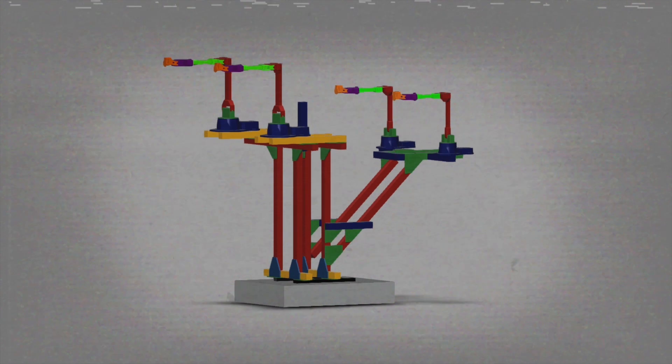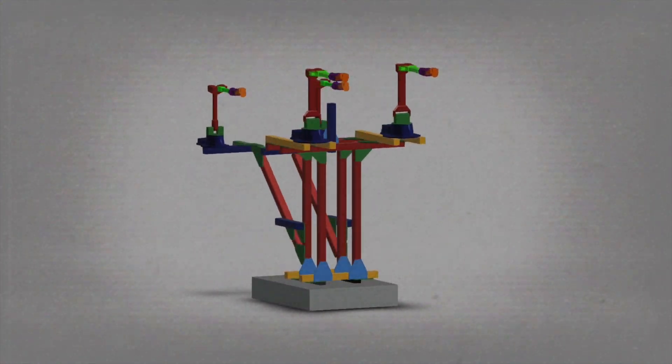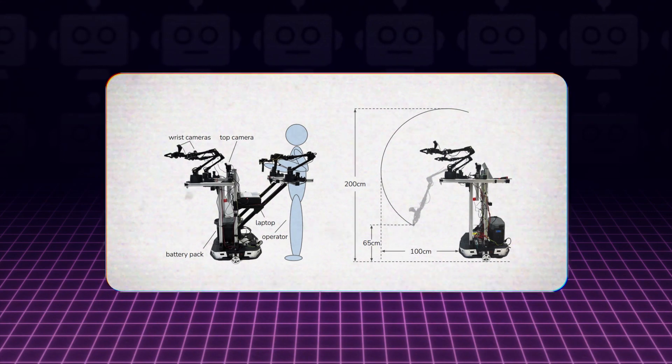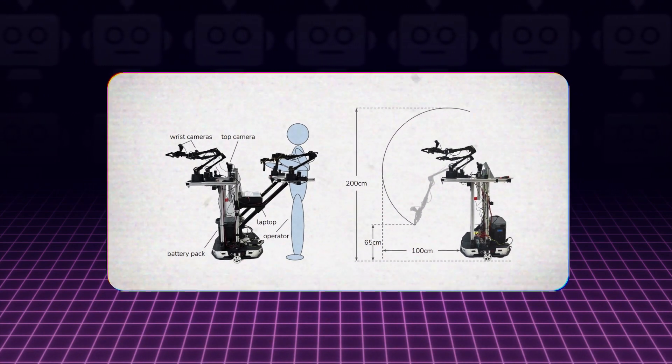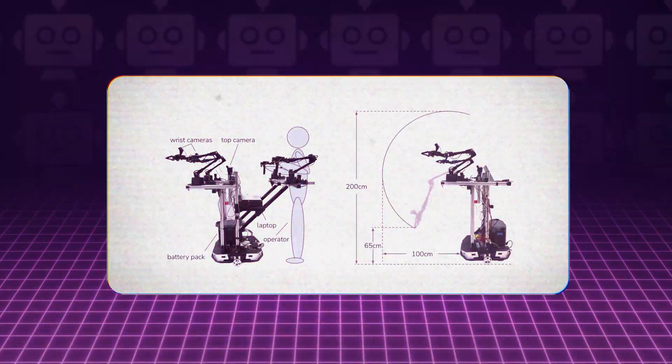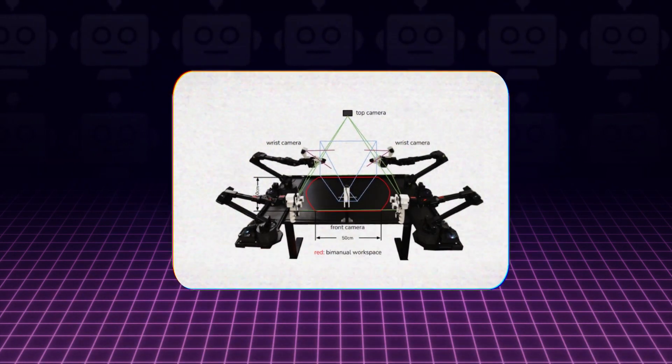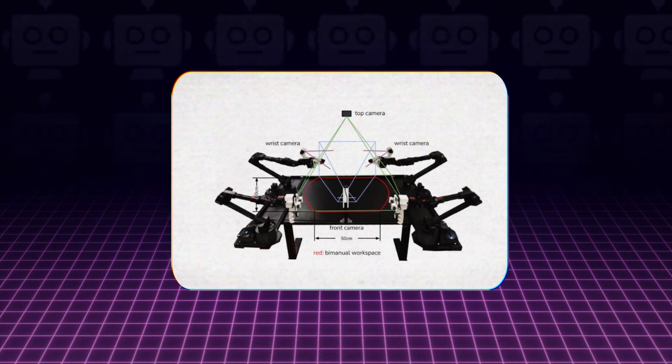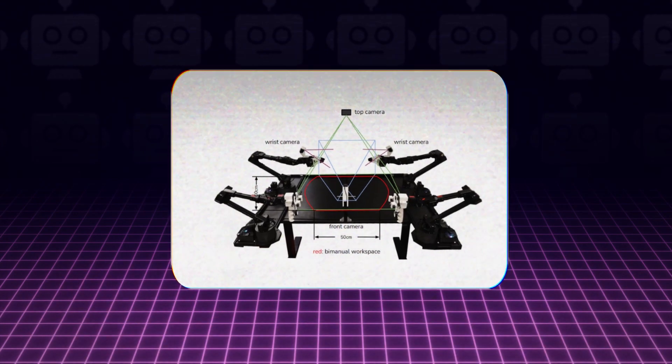Physically, the Mobile Aloha is a bimanual system, meaning it has two hands, or manipulators. This design allows it to perform tasks that require both hands, much like a human would. Its sleek metallic frame houses a sophisticated array of sensors, manipulators, and actuators.